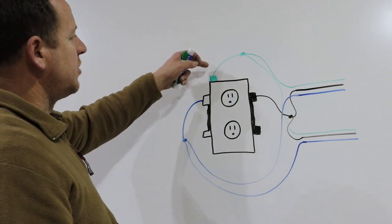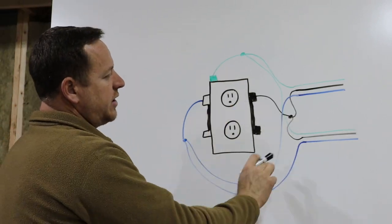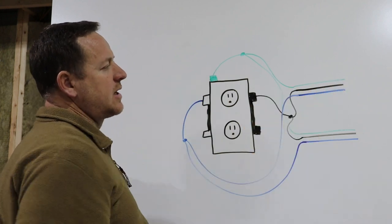When you plug in your device, it completes the circuit and goes through the neutral screw back to the panel box. Your ground just follows suit with the neutral, follows it back to the panel box.